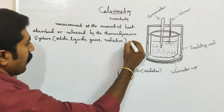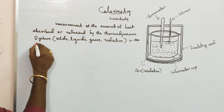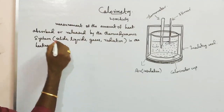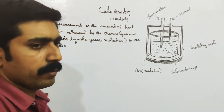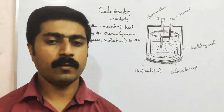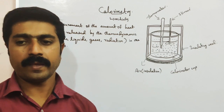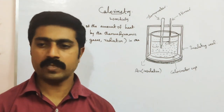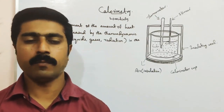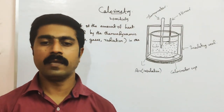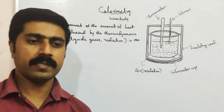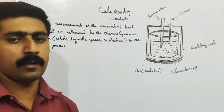In the process of heating, if you use a measuring device, it is called a calorimeter. The calorimeter is the measuring instrument used to measure the amount of heat absorbed or released by the body. This activity of measurement is called calorimetry.